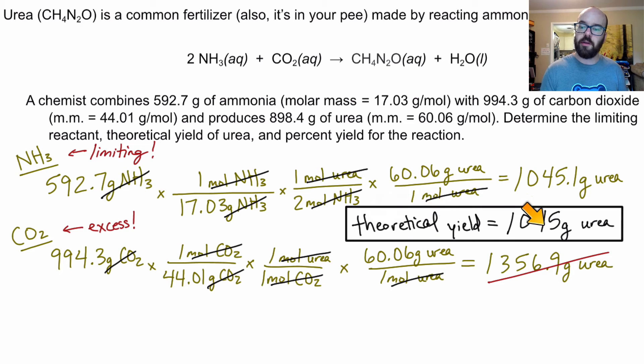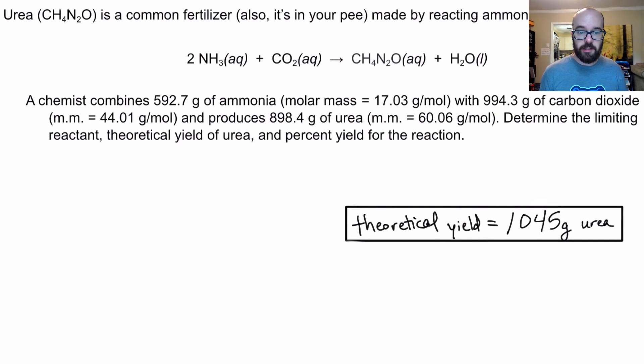So theoretically, it yields 1,045 grams. I did four sig figs because all of our numbers here have four sig figs in them. You always do the least number of sig figs in the data that you used here is what you can keep. So I can't keep all five. I'm going to keep four here.